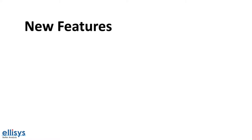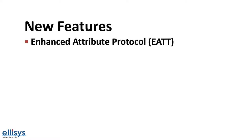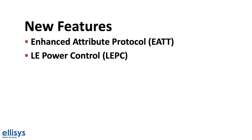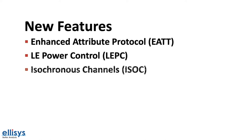The three major features introduced in Bluetooth 5.2 are the enhanced attribute protocol, LE power control or LEPC, and isochronous channels. Let's go over each of these in a bit more detail.